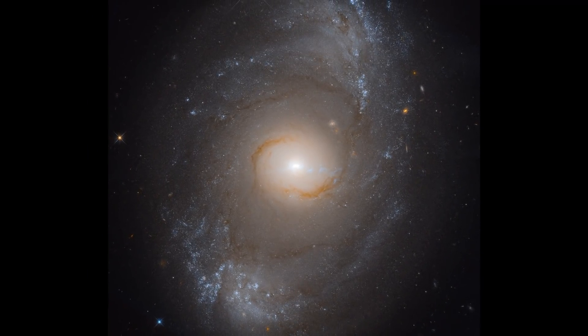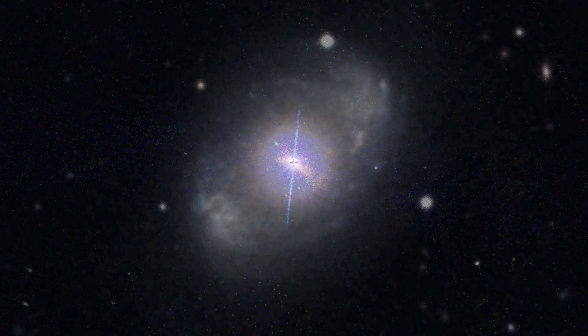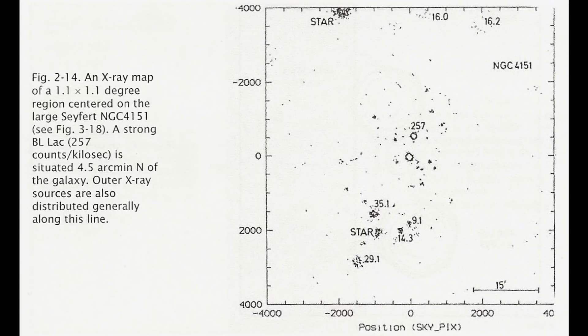NGC 4151. Now this is another Seyfert galaxy. Again here when we examine the X-ray image we see a line of X-ray sources stretching in a line through the galaxy and beyond. These are identified with blue stellar objects and are likely candidates for quasars.